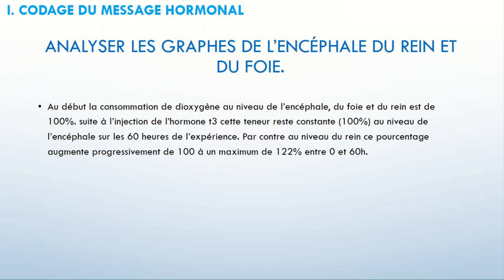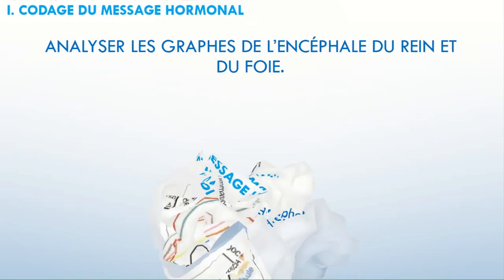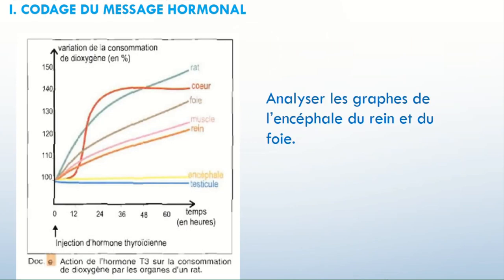Donc la réponse sera la suivante. Au début, la consommation de dioxygène au niveau de l'encéphale, du foie et du rein est de 100%. Suite à l'injection de l'hormone T3, cette teneur reste constante à 100% au niveau de l'encéphale sur les 60 heures de l'expérience. Par contre, au niveau du rein, ce pourcentage augmente progressivement de 100 à un maximum de 122% entre 0 et 60 heures.